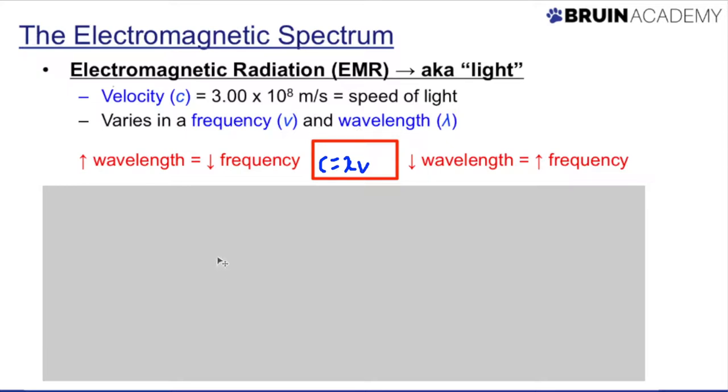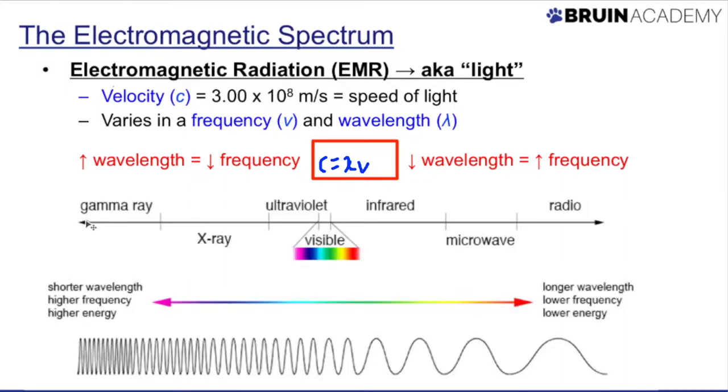The electromagnetic spectrum shows you all the different types of EMR, and these EMR vary in their wavelengths and frequencies. So on the very left, we have short wavelength, and short wavelength corresponds to high frequency, and energy is directly proportional to frequency, so high energy.